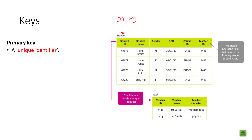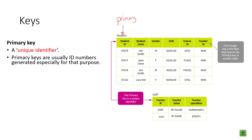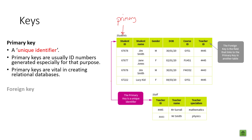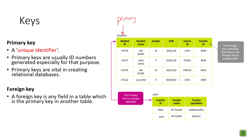In your exam, if you're explaining what a primary key is, the keyword to use is 'unique identifier.' Primary keys are usually IDs or numbers generated especially for that purpose. The first column in your relational database is normally your primary key field. Every table must have a primary key, and primary keys can't be null. A foreign key enables us to link tables together.